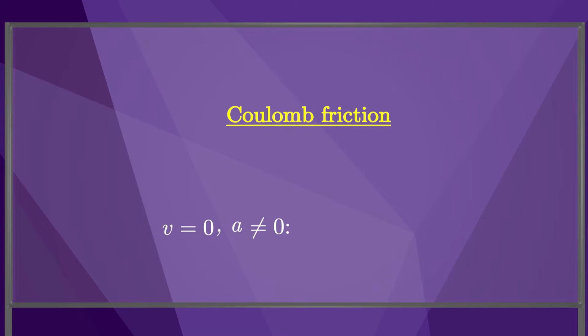If the velocity is zero but the acceleration A is non-zero, then slip is about to occur, and the same equation applies, substituting A for V.